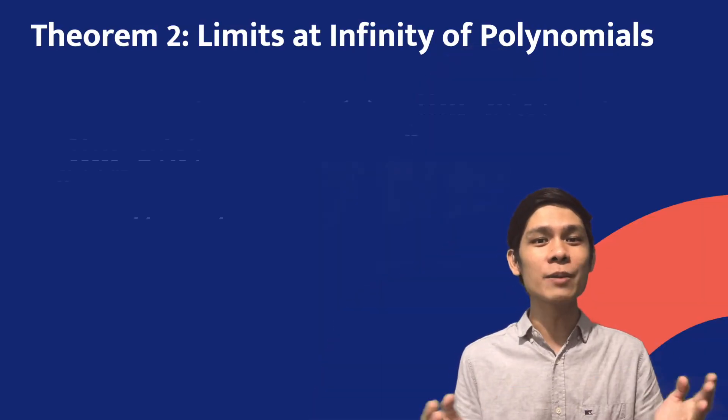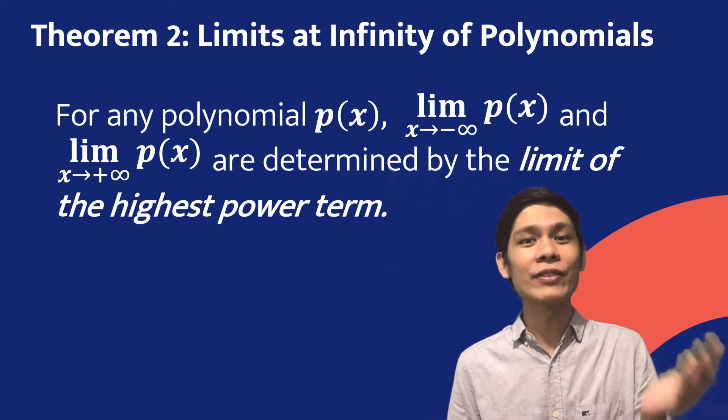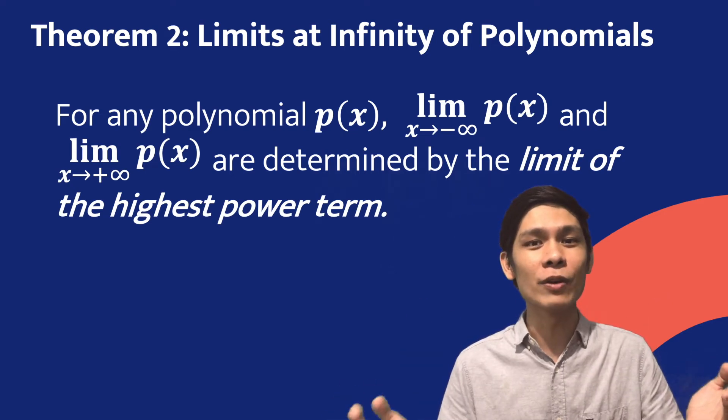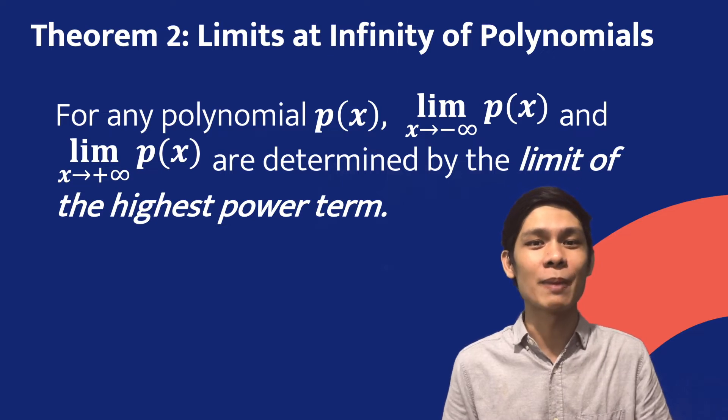Theorem number 2 states that for any polynomial p(x), the left-hand limit and the right-hand limit of p(x) are determined by the limit of the highest power term.